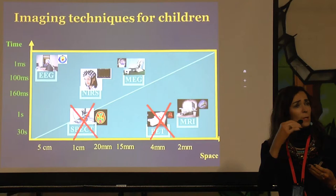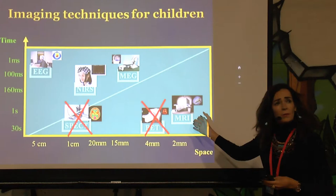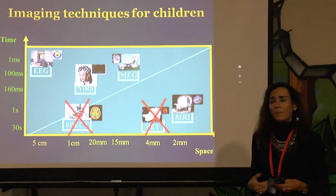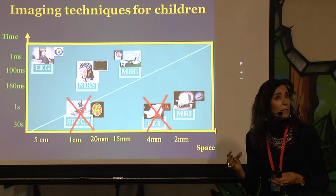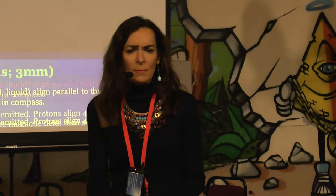MRI is the best technique and the only imaging technique which can measure both the structure of the brain — like the hardware — and the function — like the software, the activity in the brain. All other methods can only measure the activity of the brain, not the structure. That's why MRI has been used over the last 20 years in psychiatry to understand what areas are abnormal in children with ADHD.